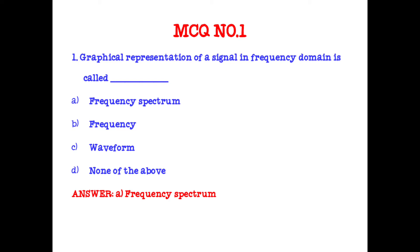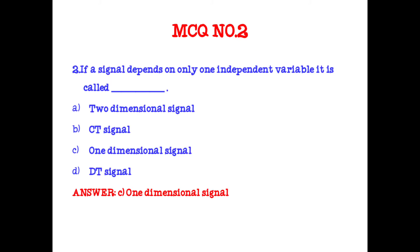If a signal depends on only one independent variable, it is called a one-dimensional signal. A signal which is a function of a single independent variable is called a one-dimensional signal. Two independent variables give a two-dimensional signal. Three independent variables give a three-dimensional signal.